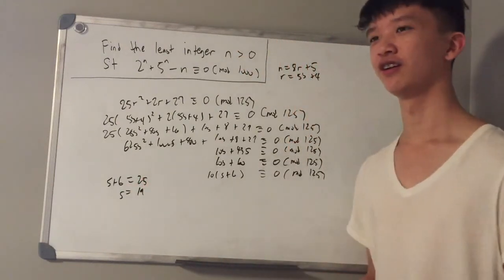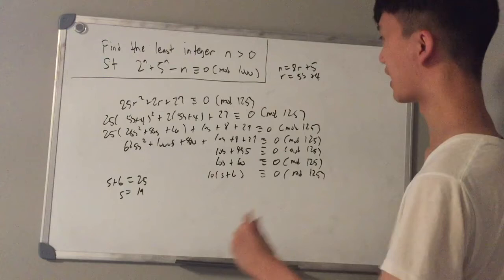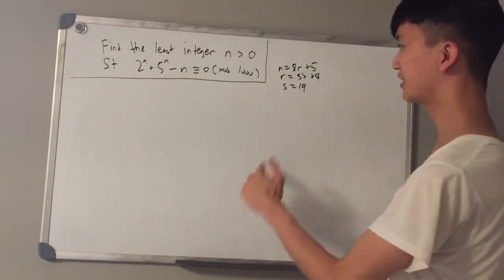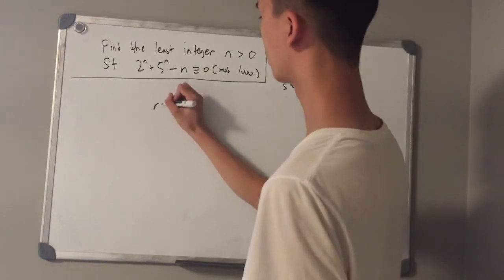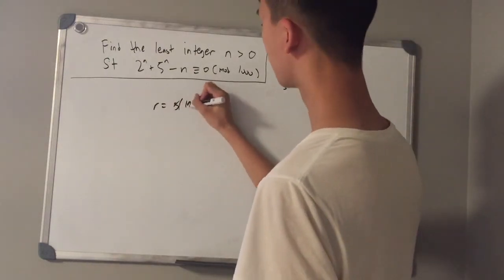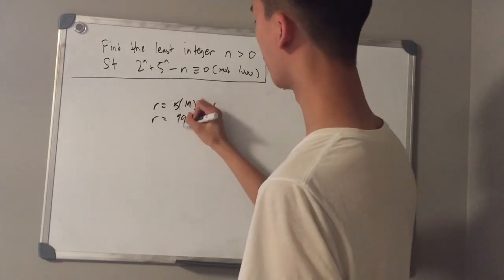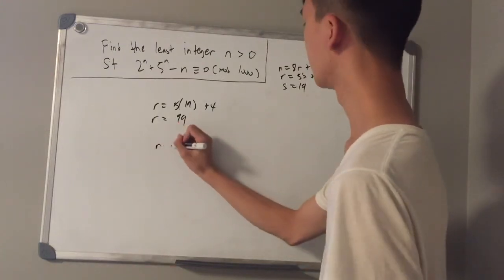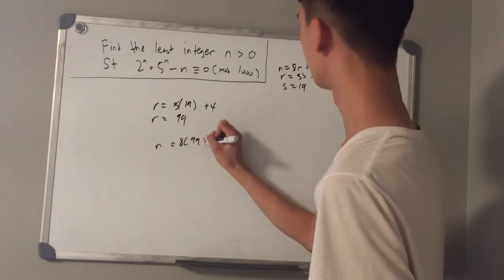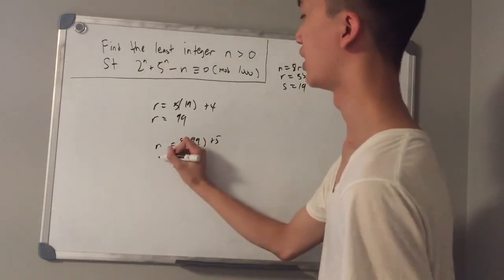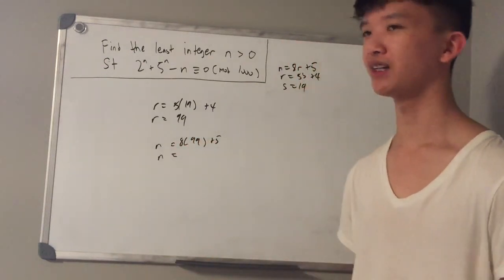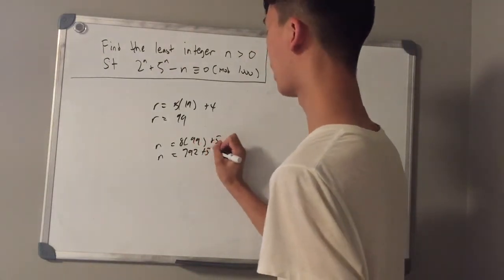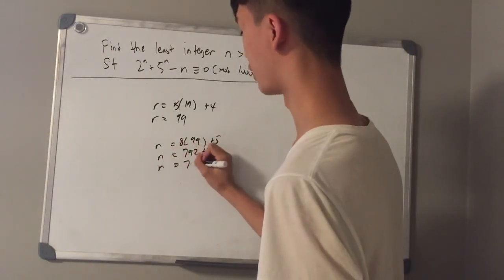Therefore s is equal to 19. Substituting back, r equals 5 times 19 plus 4, so r equals 99. Then n equals 8 times 99 plus 5. Since 8 times 99 equals 8 times 100 minus 8, which is 792, we get n equals 792 plus 5, so n equals 797.